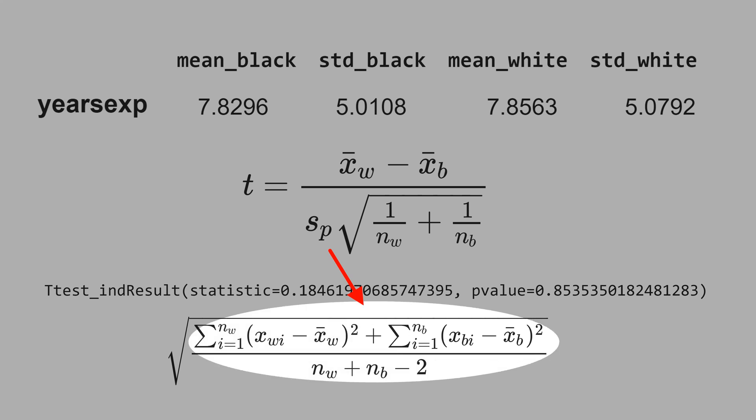See that it is the average of both variances. You divide by the number of observations of white people and the number of observations of black people. Minus 2 is the degrees of freedom, because you know two variables here: the mean of white people and the mean of black people.